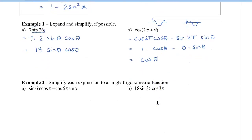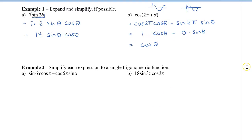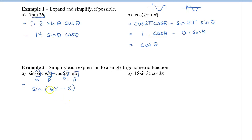Now we want to simplify expressions to a single trigonometric function — going in reverse. Recognizing identities is very useful here. For the expression with sin 6x cos x minus cos 6x sin x, that matches the sine difference identity, where 6x is α and x is β. Going in reverse, we get sin(6x − x) = sin 5x.